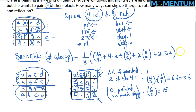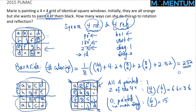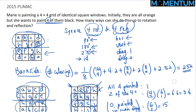Summing all contributions, the total comes out to 252. That solves this Burnside's Lemma application, a problem from the 2015 PUMAC. Hope to see you in our next lecture.